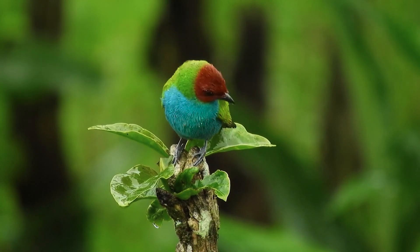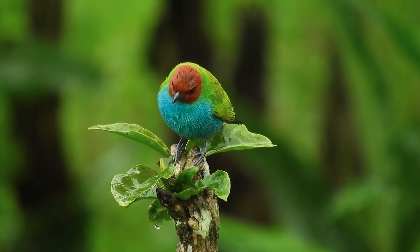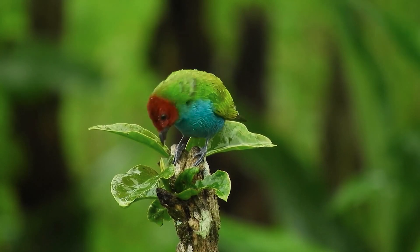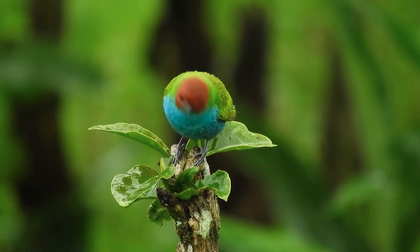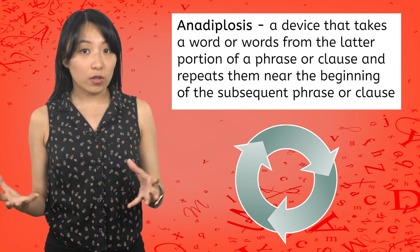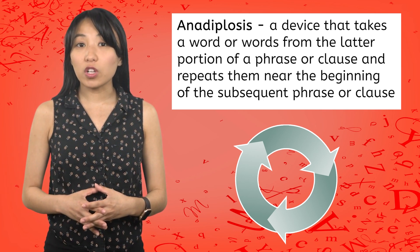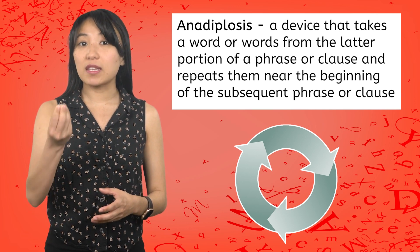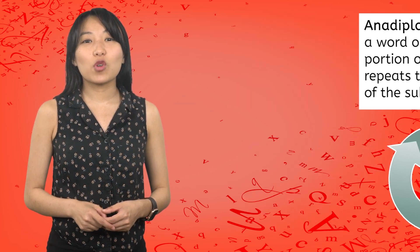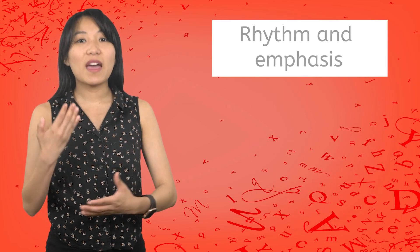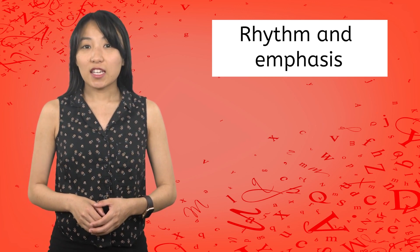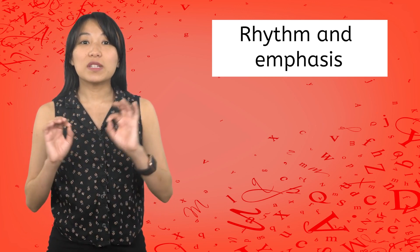This is the anadiplosis bird. This one is really special. It uses a repetitive rhetorical device to call to other birds. Anadiplosis is a device that takes a word or words from the latter portion of a phrase or clause and repeats them near the beginning of the subsequent phrase or clause. Anadiplosis is a form of repetition that creates rhythm and emphasis. The word anadiplosis is derived from the Greek and can be translated as 'to be doubled back.'